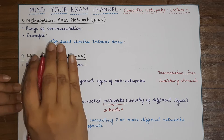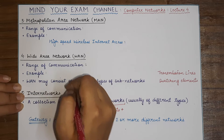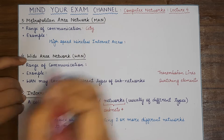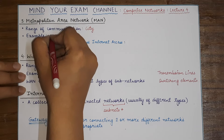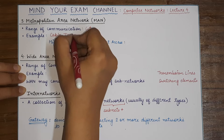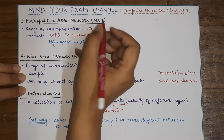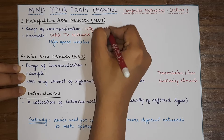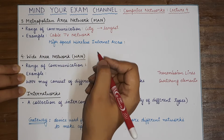Starting with Metropolitan Area Network — in the previous videos we studied about personal area networks and local area networks. A Metropolitan Area Network is a network that spans a wider or larger area than a local area network. Its range of communication is a city. A network as large as a city, like a cable TV network, is known as a Metropolitan Area Network.